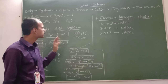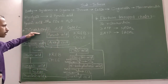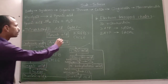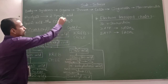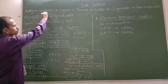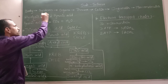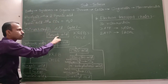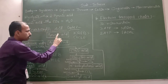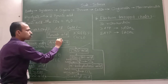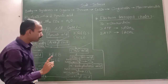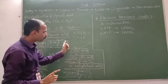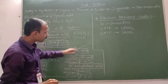In this cycle, pyruvic acid — the product of glycolysis — is oxidized in the presence of acetyl coenzyme A, and it forms citric acid. After that, citric acid produces isocitric acid.